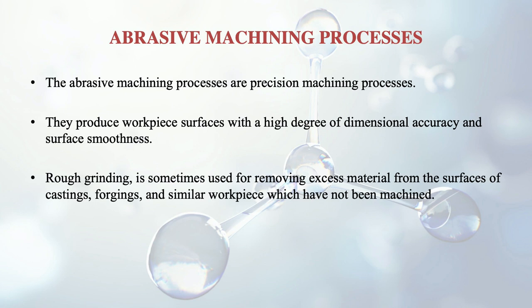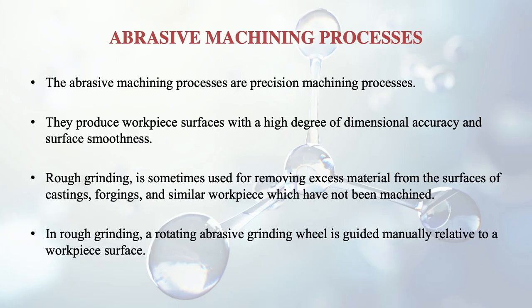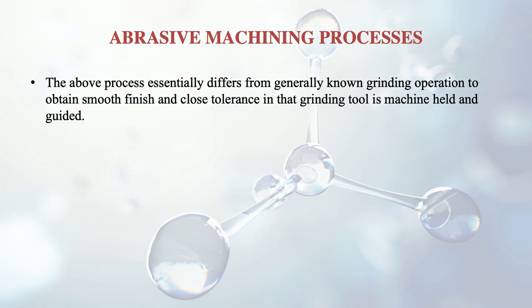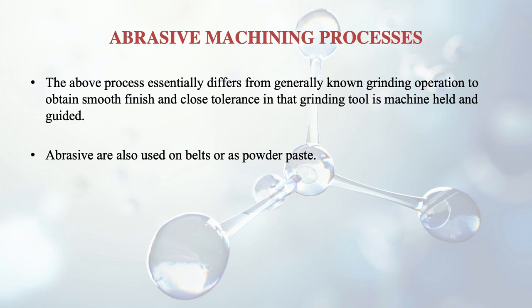Rough grinding is sometimes used for removing excess material from the surface of castings, forgings and similar workpieces which have not been machined. In rough grinding, a rotative abrasive grinding wheel is guided manually relative to a workpiece surface. This process differs from generally known grinding operations used for smooth finish and close tolerance, where the grinding tool is machine-held. Abrasives are also used on belts or as powder paste.